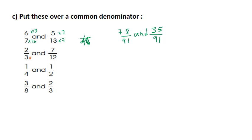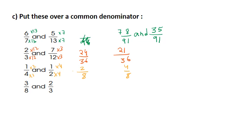I'm going to multiply the first fraction by the second denominator and the second fraction by the first denominator, obtaining the same denominator in both, which is 36. Now 2 times 12 is 24, and 7 times 3 is 21. The third one — I'm going to multiply here by 2 and here by the first denominator, which is 4. So I will get 2 over 8 and 4 over 8. The last one: I multiply here by 3 and here by 8, so I get 9 over 24 and 16 over 24.